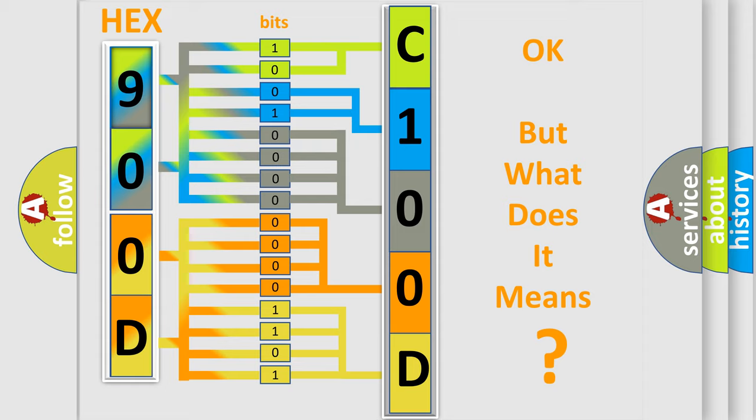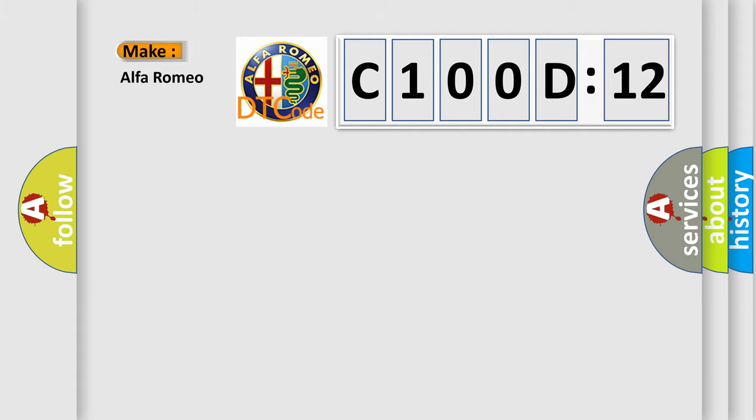The number itself does not make sense to us if we cannot assign information about what it actually expresses. So, what does the diagnostic trouble code C100D12 interpret specifically for Alfa Romeo?